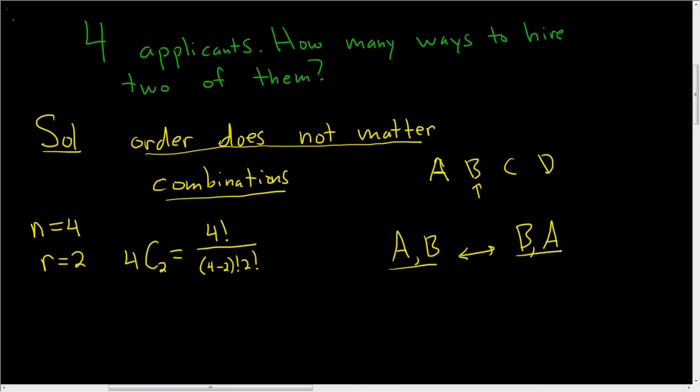The general formula is N choose R equals N factorial over N minus R factorial, R factorial. So in this case, we just plugged in the N and the R and everything is good.